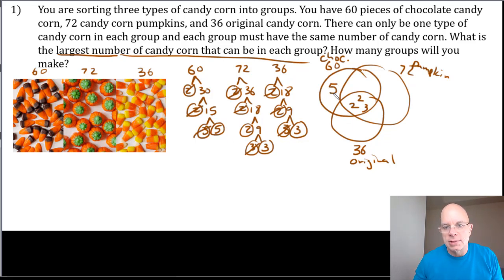I see that the 72 and 36 still have a common prime factor of 3, so that will go in the intersection of 72 and 36 right here. And then the 72 needs one more 2 in the 72 only section.